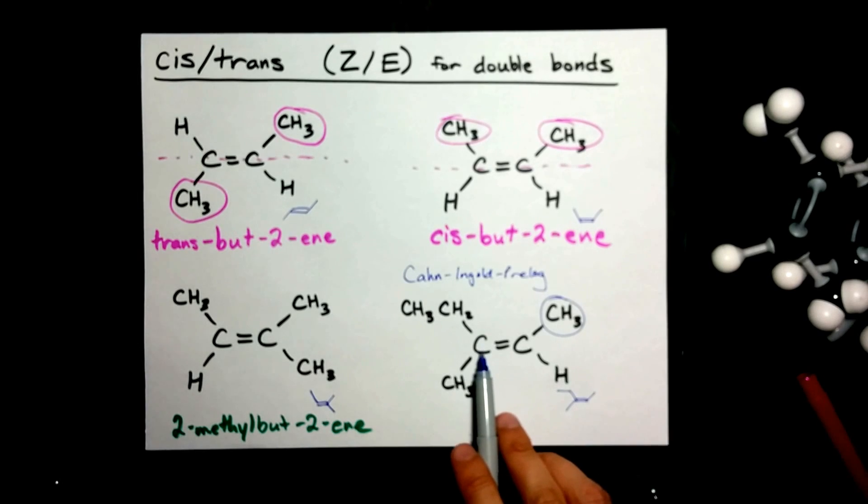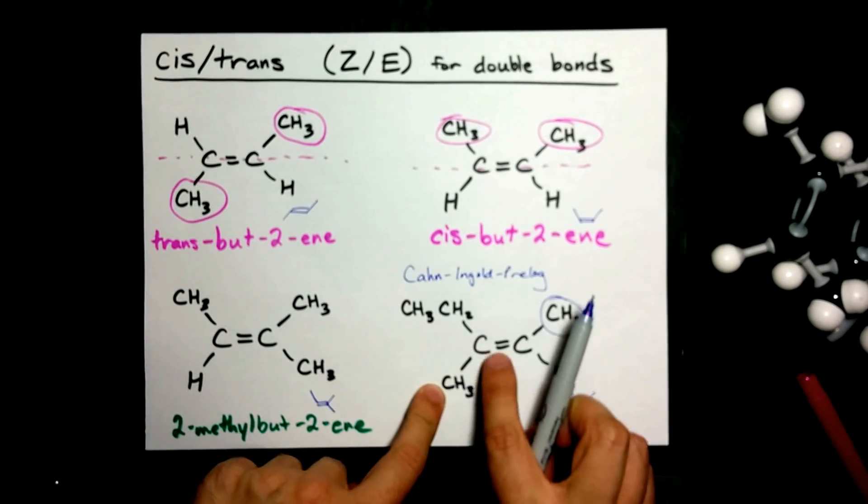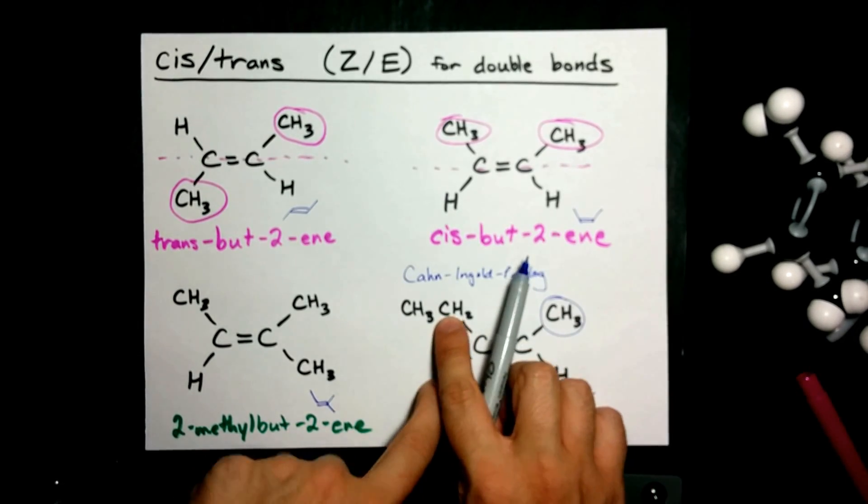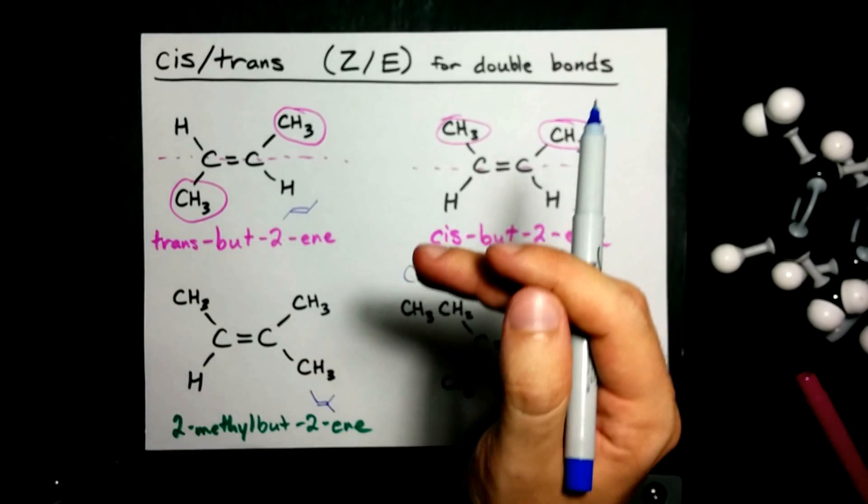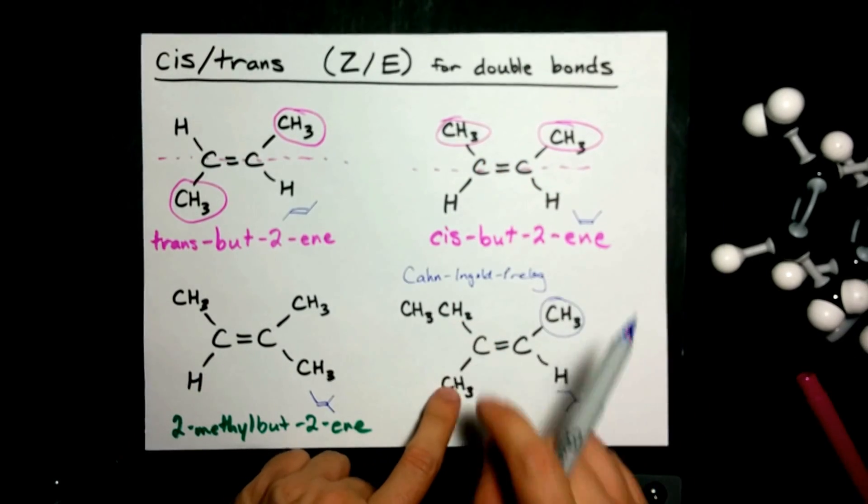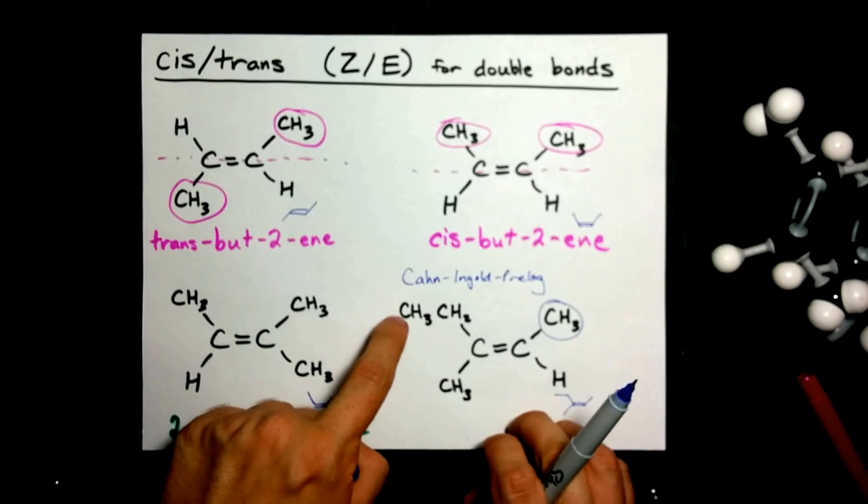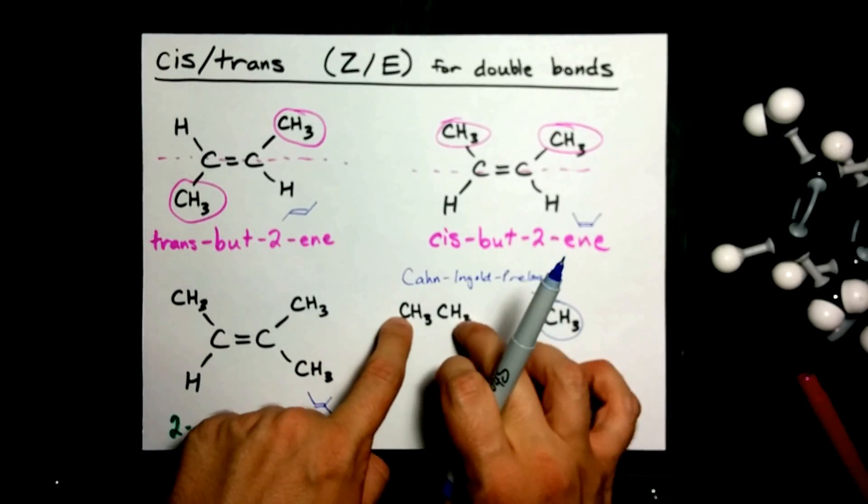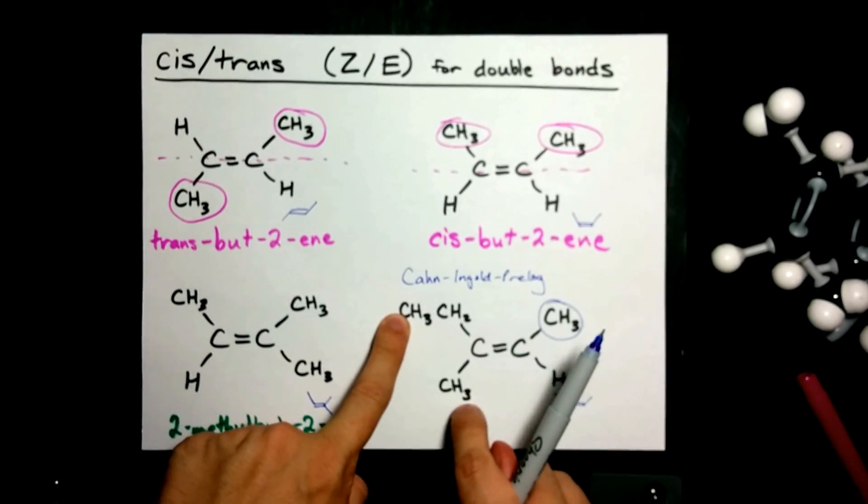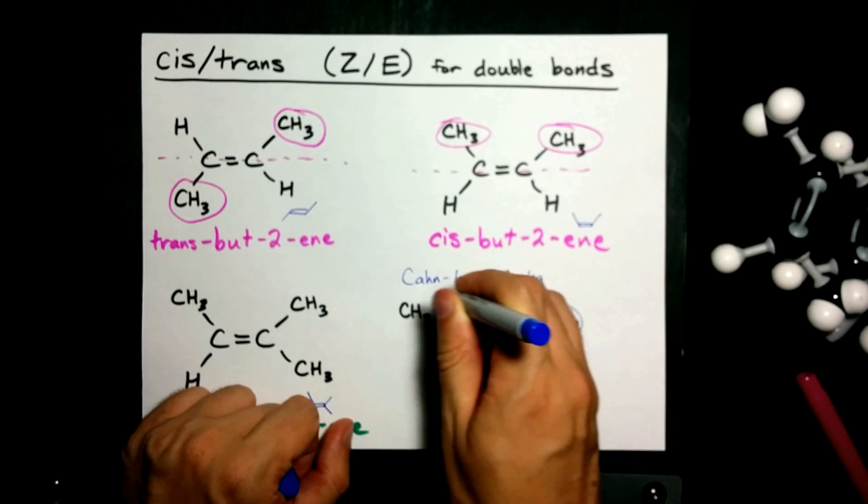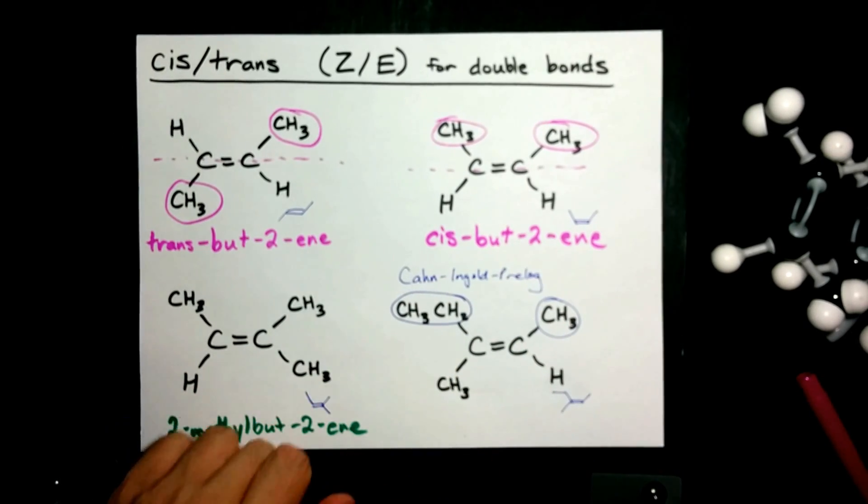Taking a look at this carbon, it's attached to a carbon here and a carbon here. Those are the same, so we have to branch out further. This carbon was connected to three hydrogens. This carbon was connected to another carbon and two hydrogens. That carbon beats out the hydrogen, so he gets precedence on these two.